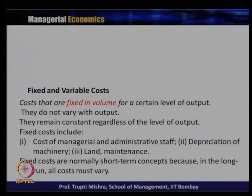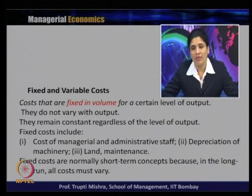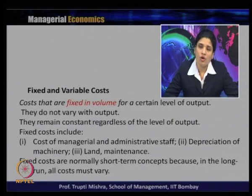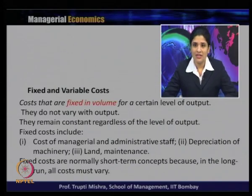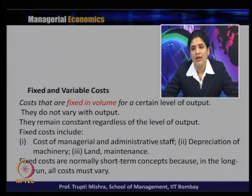To start with, fixed cost and variable cost: there are two types of factors — fixed and variable. Costs that are fixed in volume for a certain level of output are generally known as fixed cost. Suppose to produce 100 units of output the capital (machine) is fixed; if only one machinery is required, then the cost also remains the same up to 100 units of output. They do not vary with the output — they remain constant regardless of the level of output.